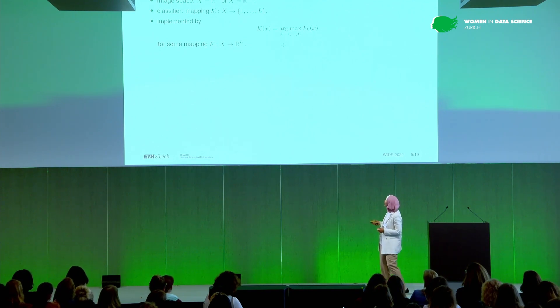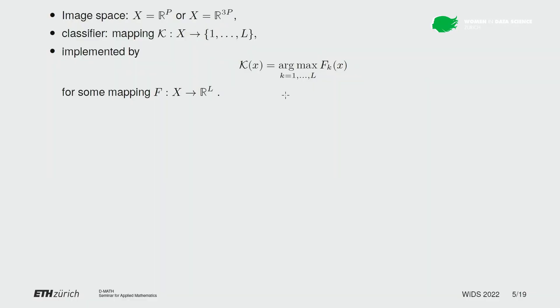Let me just set the stage here. We have the image space. We think of images as vectors — in grayscale, p here is the number of pixels, so we would think of vectors of length p, or in RGB it would be vectors of length 3p. And a classifier is just a mapping that for each vector gives you a label. Here we have L classes. We implement this typically with a function f, a mapping f that gives you a vector of likelihoods, and we choose the most likely class or label.